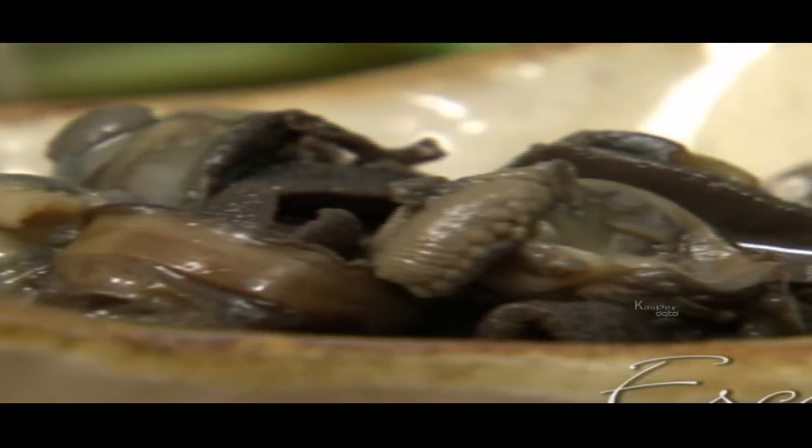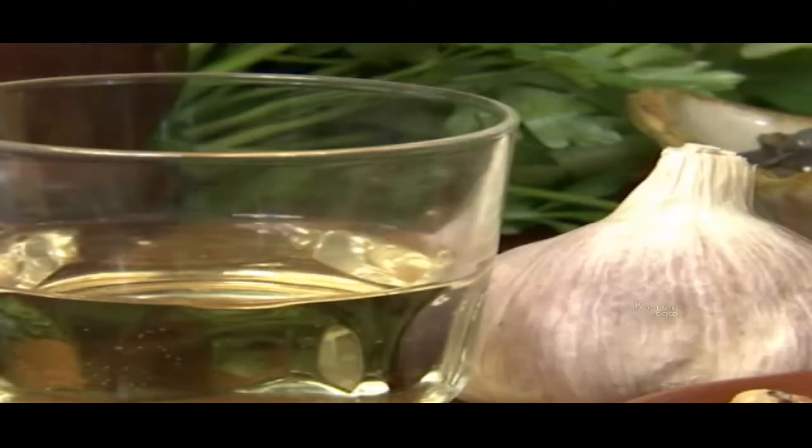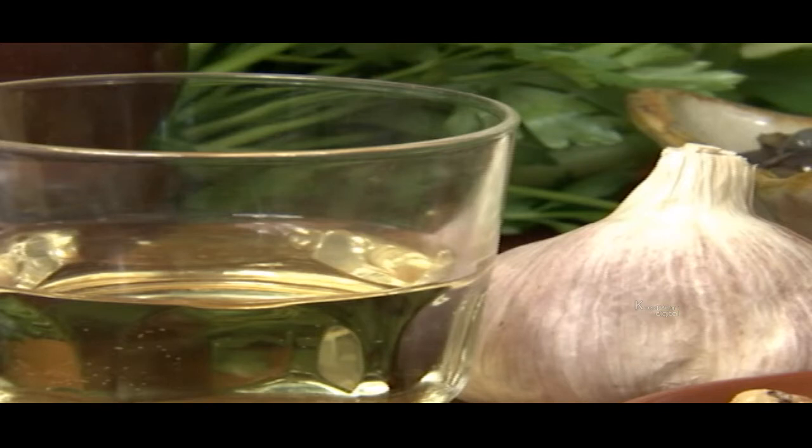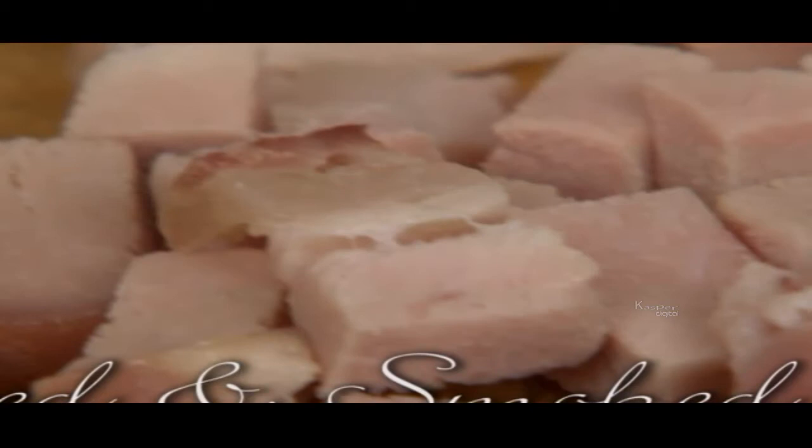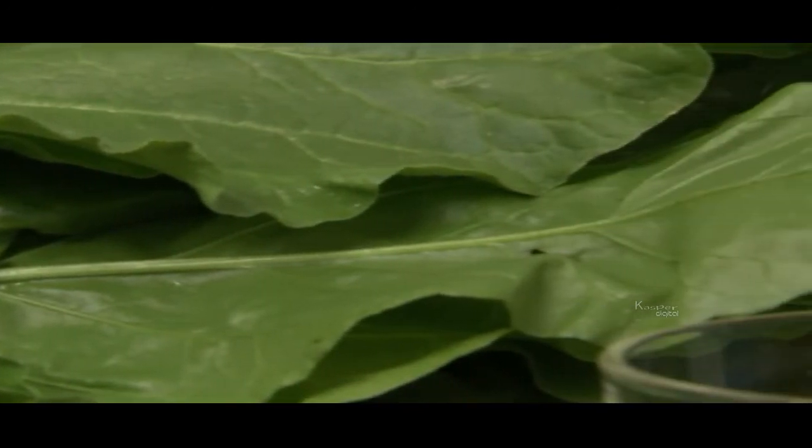For this dish, you will obviously need some escargot or snails. Now don't just grab them out of the garden though. Snails need to be purged or prepared for consumption and are generally slow cooked in stock to soften the flesh. Also, for this escargot entree, you will need some other basic ingredients. And finally, some spinach, as we will be serving this dish on a spinach bed.